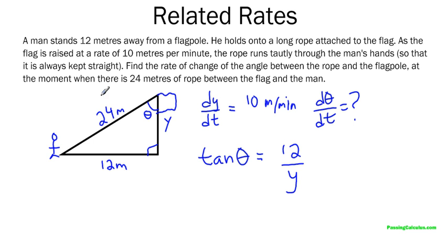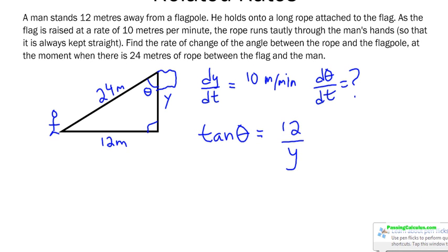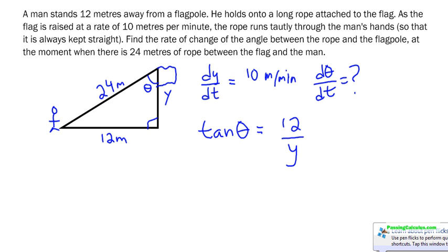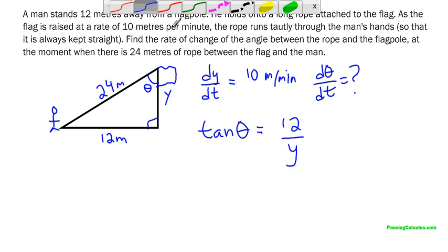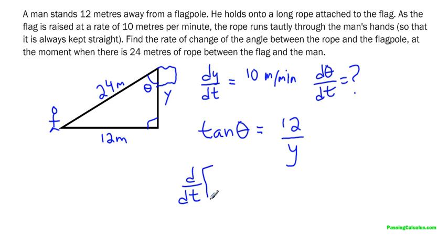So again, the reason I'm not using this is because this is changing. It's only 24 for a brief moment. Alright, so now we need to take the derivative. So this is where we have to use implicit differentiation. So I'm going to take the derivative of both sides with respect to time. So that's important to know anyway.